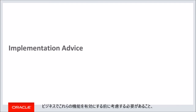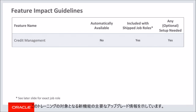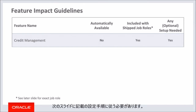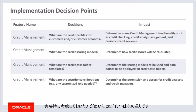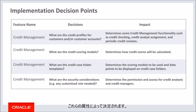In this implementation advice section, we'll go through what you need to consider before enabling these features and what you need to know to set them up. This feature is not automatically available after an upgrade — you need to follow the setup steps to enable it. It is included with the job role credit manager. The first decision point is what credit profiles to set up for customers and customer accounts, as these attributes determine critical functionality such as credit checking, credit analyst assignment, and periodic credit reviews. The second decision is what the credit scoring models will look like: which data points will be used, what the ranges and scores are, and what the weights of the different data points are.